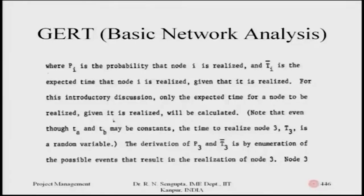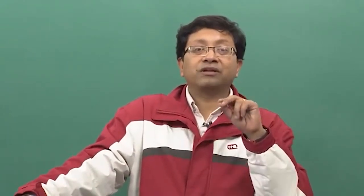Capital P_i is the probability that node i is realized. Capital T̄_i is the expected time that node i is realized. For this introductory discussion, only the expected time for a node, given it is realized, will be calculated. Note that even if small t_A and t_B may be constant, the time to realize node three — capital T_3 — is a random variable, and T̄_3 is the average of the realized values.